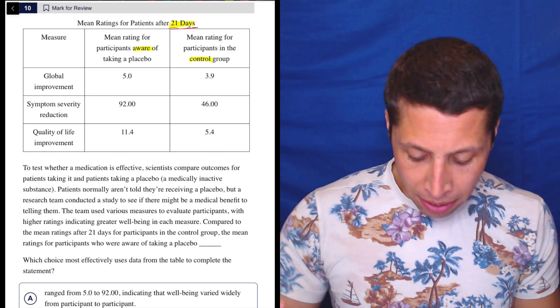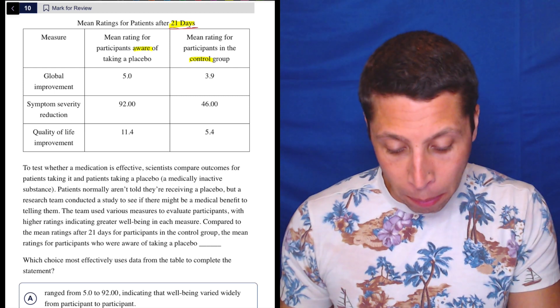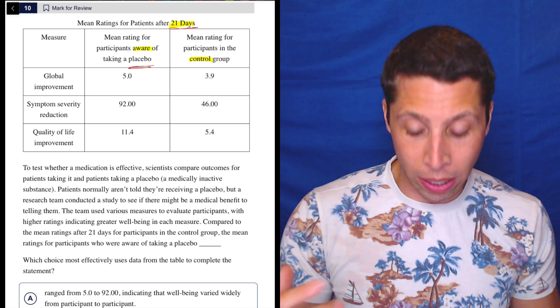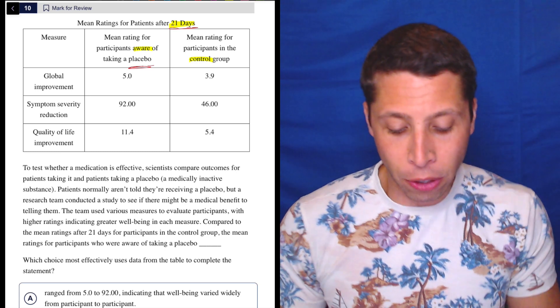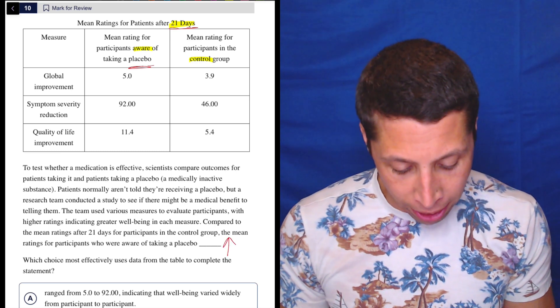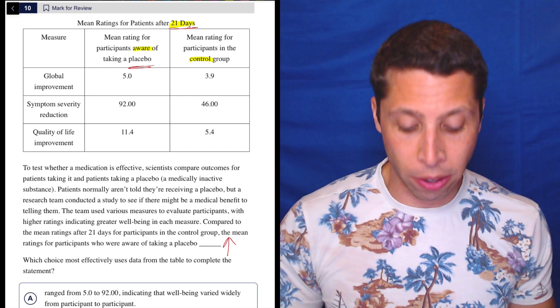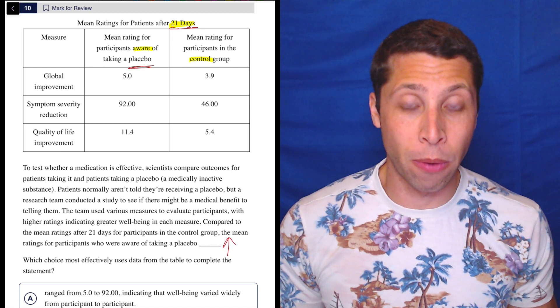So what they're asking for is what do we know about the people in the placebo group compared to the control, right? So we're looking at the left column versus the right column. So those numbers are all higher. That's literally what it is, right? Five is higher than 3.9, 92 is higher than 46, 11.4 is higher than 5.4.